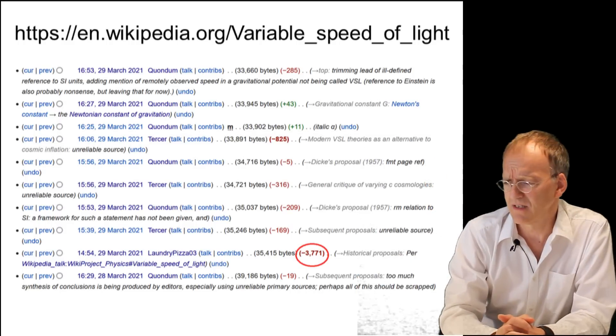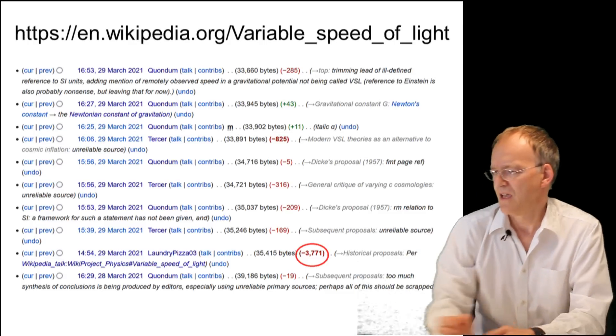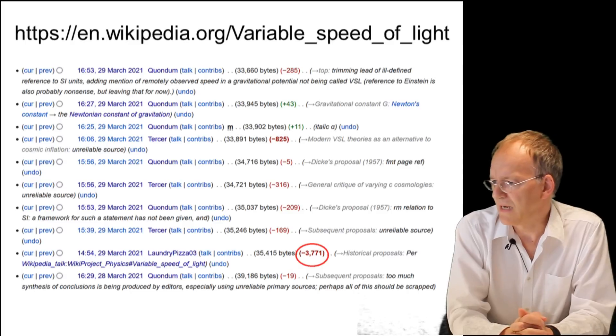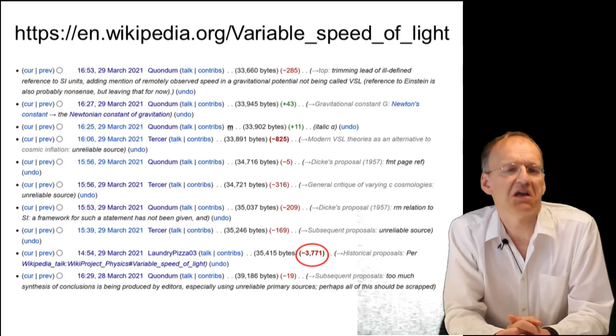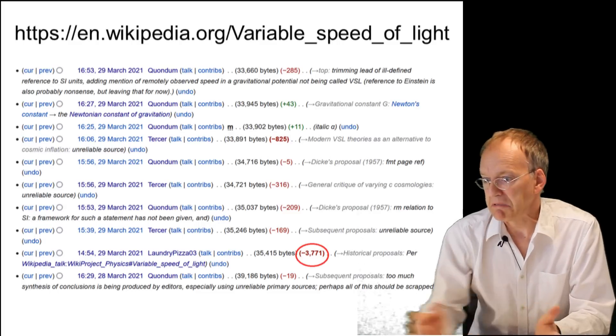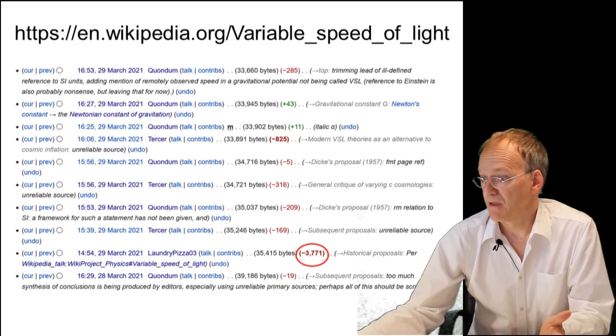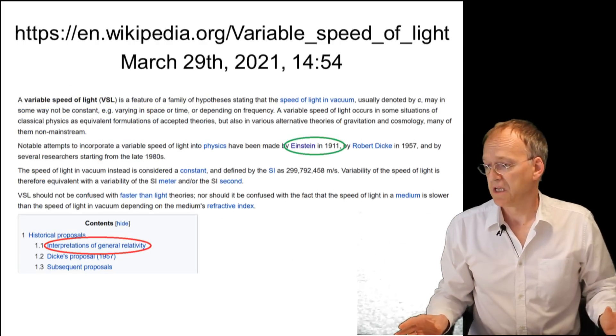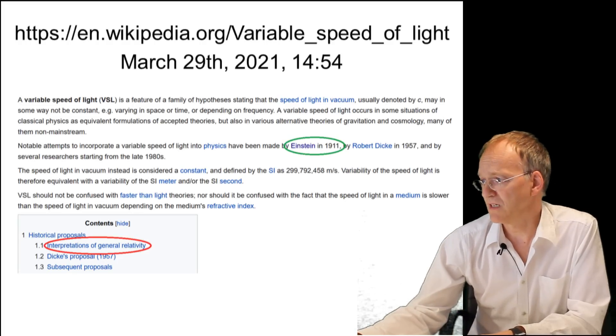So now let's see what happened to these Wikipedia entries and who did that. We look back and indeed in March 29, someone canceled almost 4,000 characters or bytes. Why? I mean, after that, if you look, the index has changed and there was no Einstein 1911 theory anymore. It is mentioned in the text, but then two hours later...